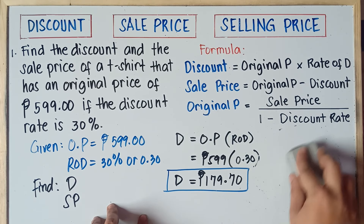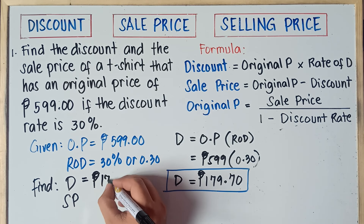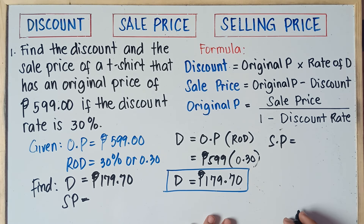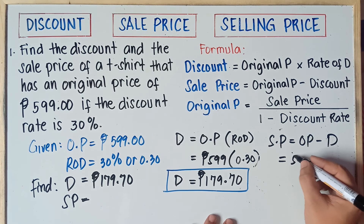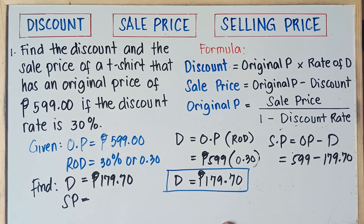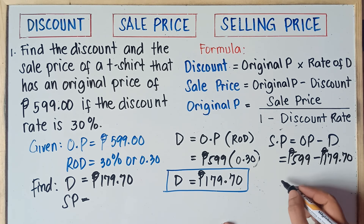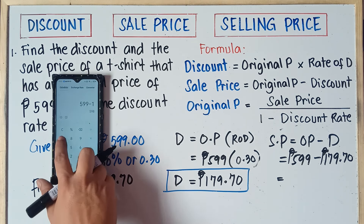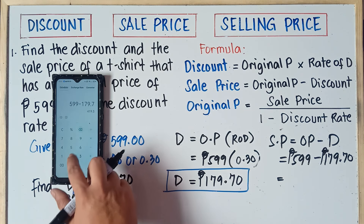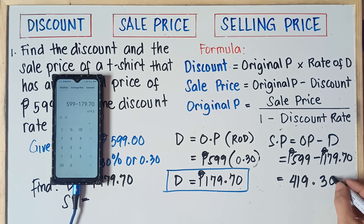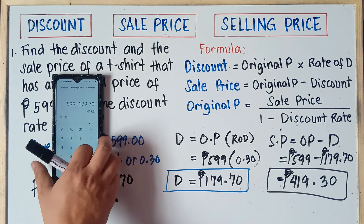Without using your calculator, the discount is equal to 179 pesos and 70 cents. Now for the sale price: Sale Price = Original Price − Discount. So that is 599 minus 179.70. Using your calculator, 599 minus 179.70 equals 419.30. So the sale price is 419.30 pesos.